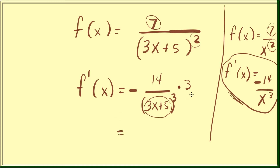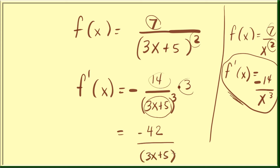That's the only extra step needed. Multiplying 14 and 3 gives 42, over (3x + 5) to the third power.